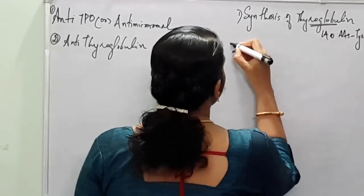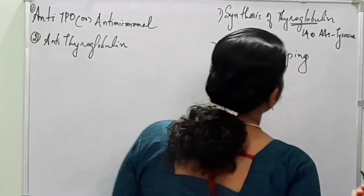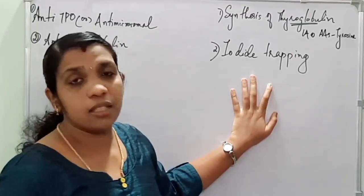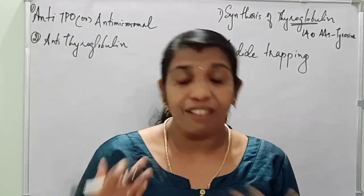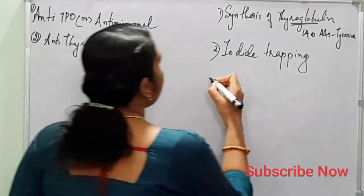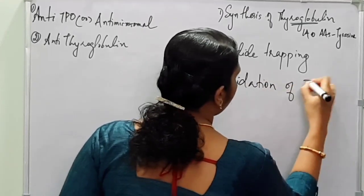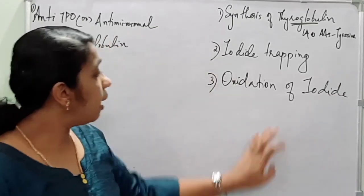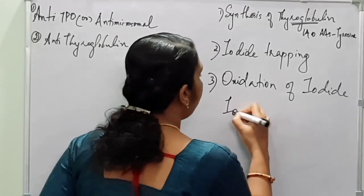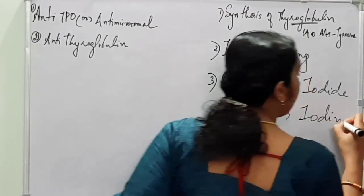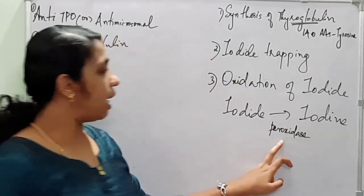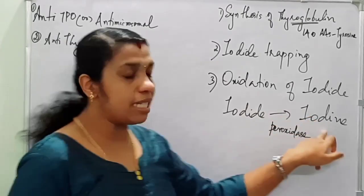The second step is iodide trapping. In this step, iodide from the blood is trapped inside the thyroid cells. The basement membrane of the thyroid cells has a high affinity towards iodide. The third step is oxidation of iodide, where iodide is oxidized to form iodine in the presence of the enzyme peroxidase.